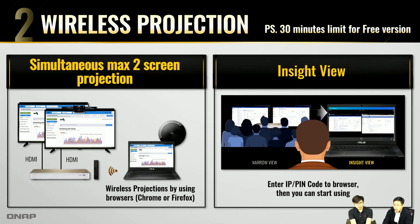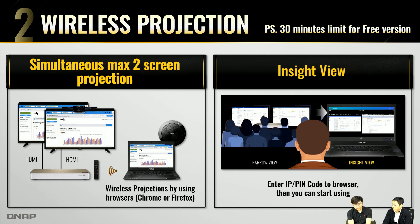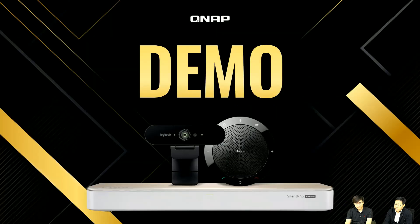The next key function is wireless projection. During a video call, if you want to share your PowerPoint, open your Chrome or Firefox browser, type the URL shown on the TV screen along with the PIN code, and you can share your content to the TV. Another feature is Inside View: if you're sitting at the back of a large meeting room and can't see the TV clearly, you can use Inside View to view the presented content right in your browser.